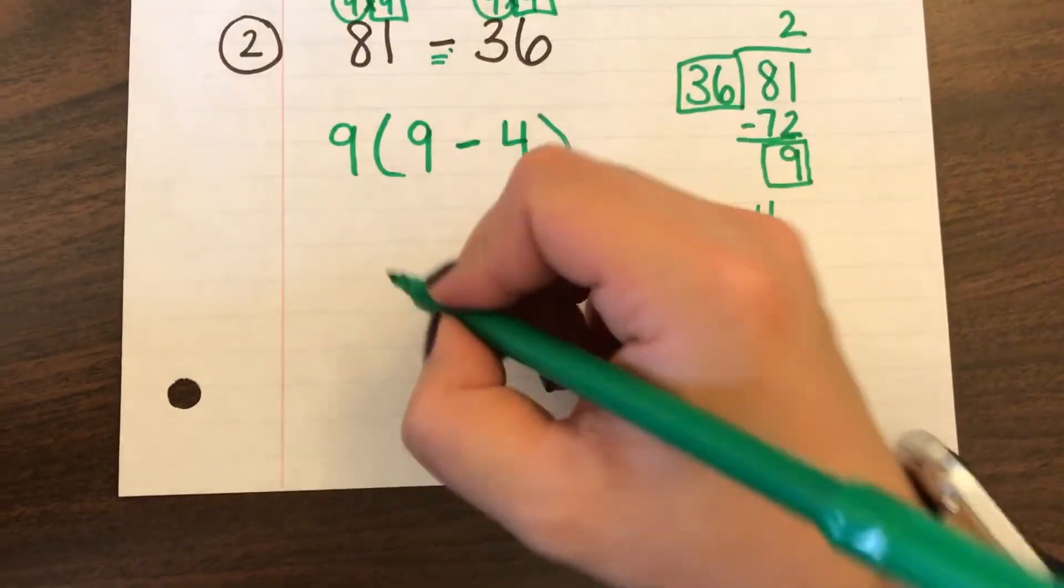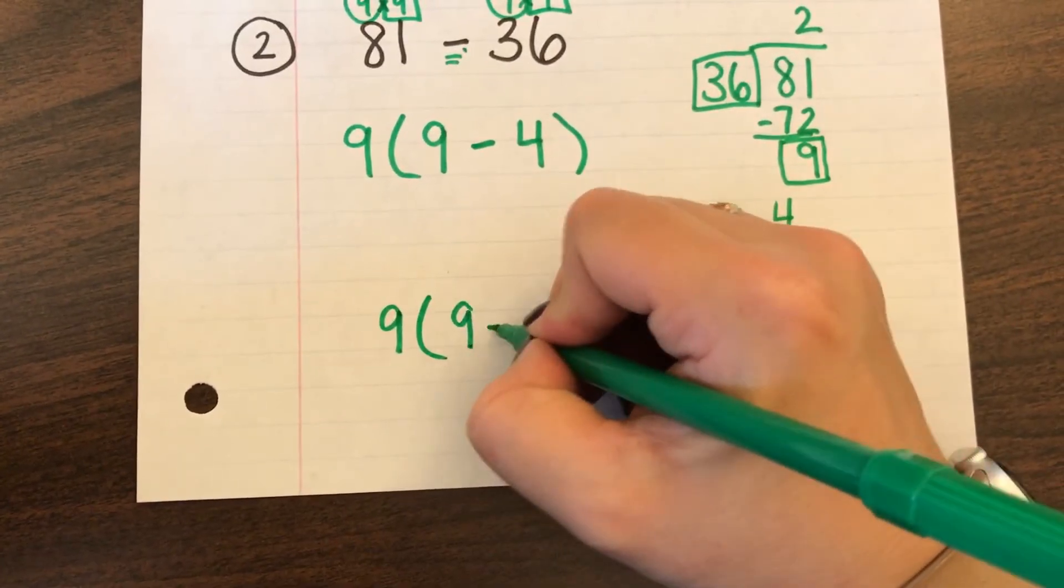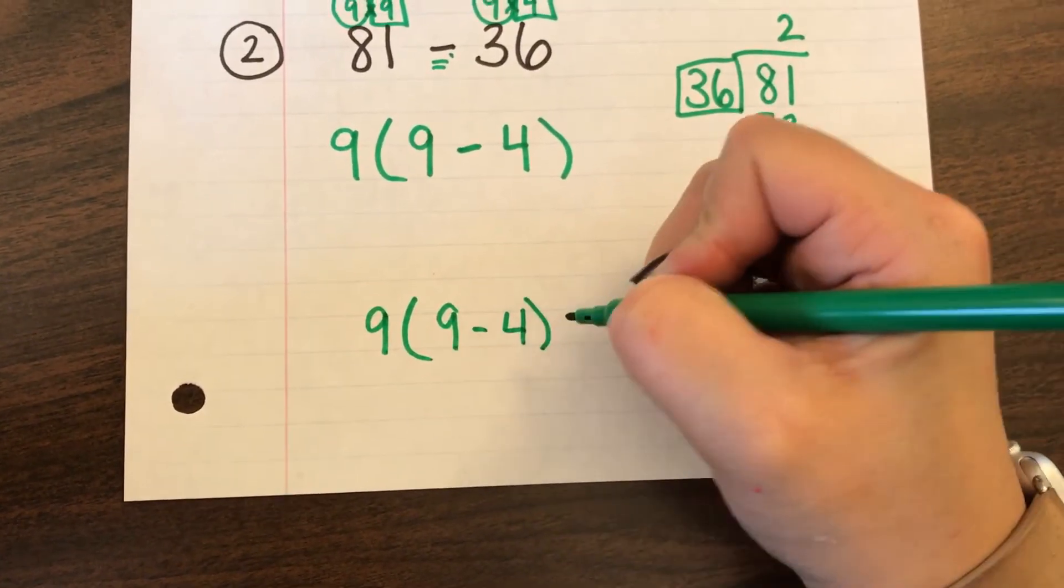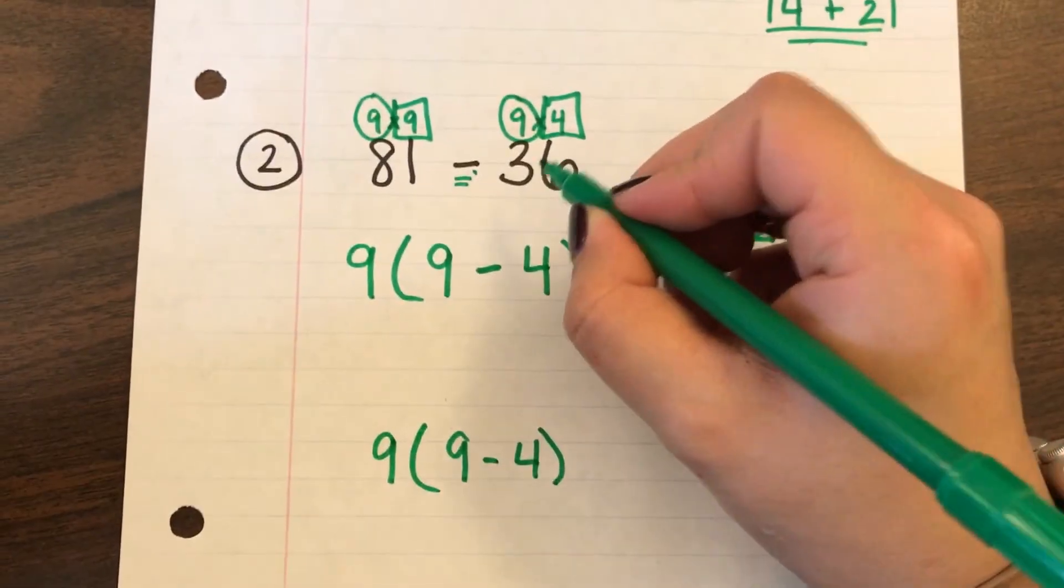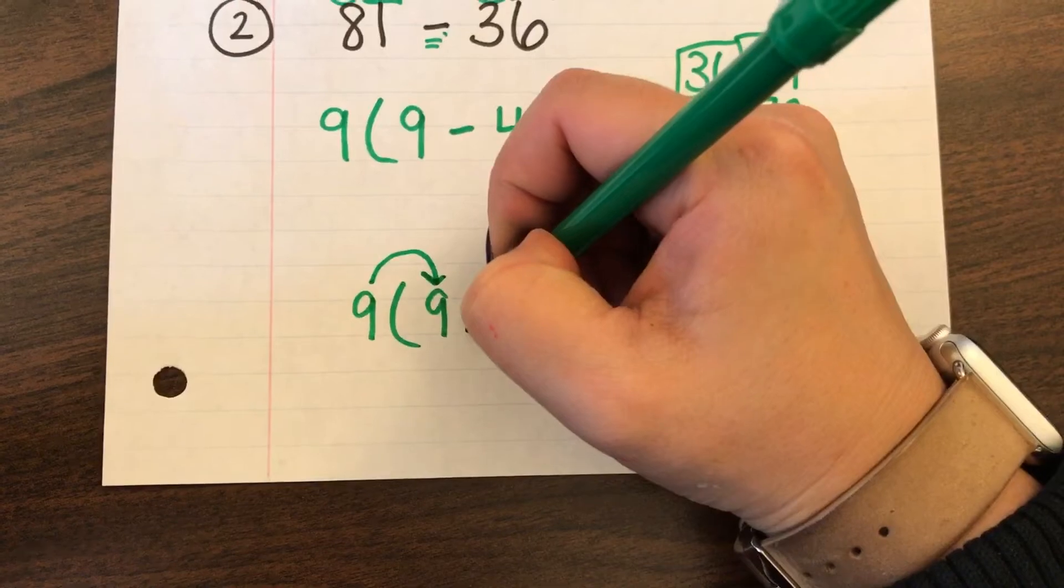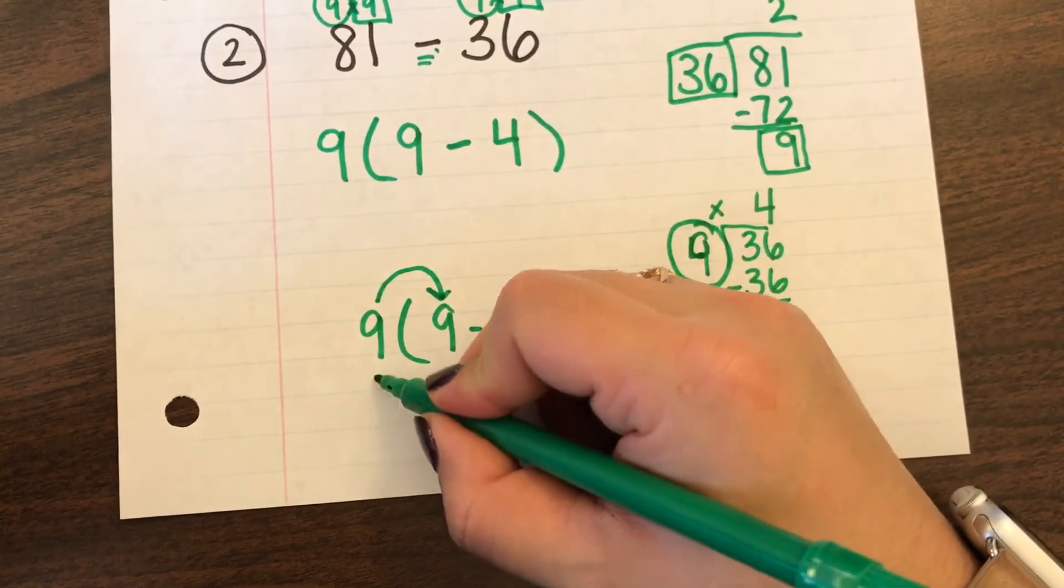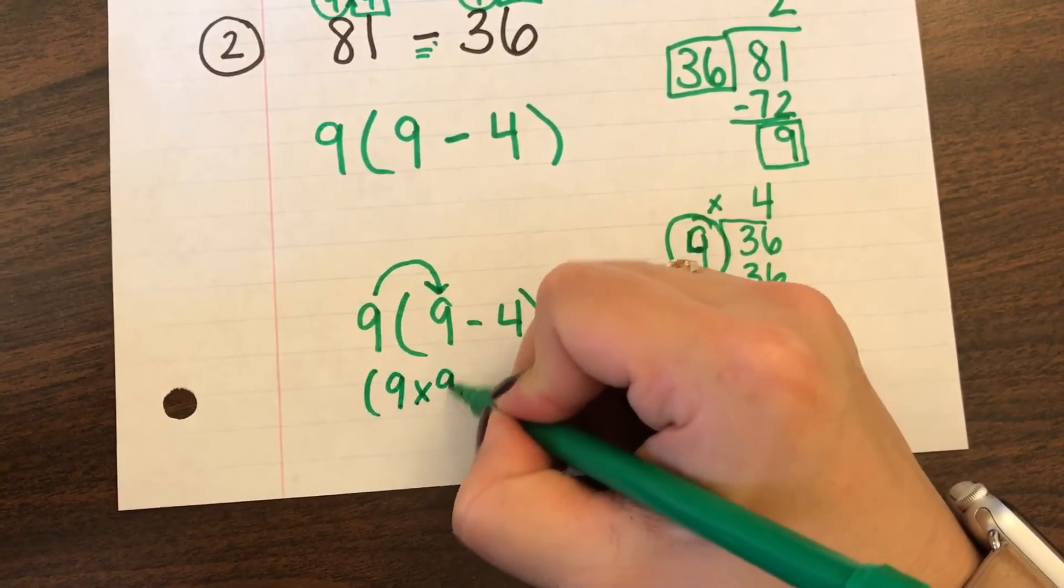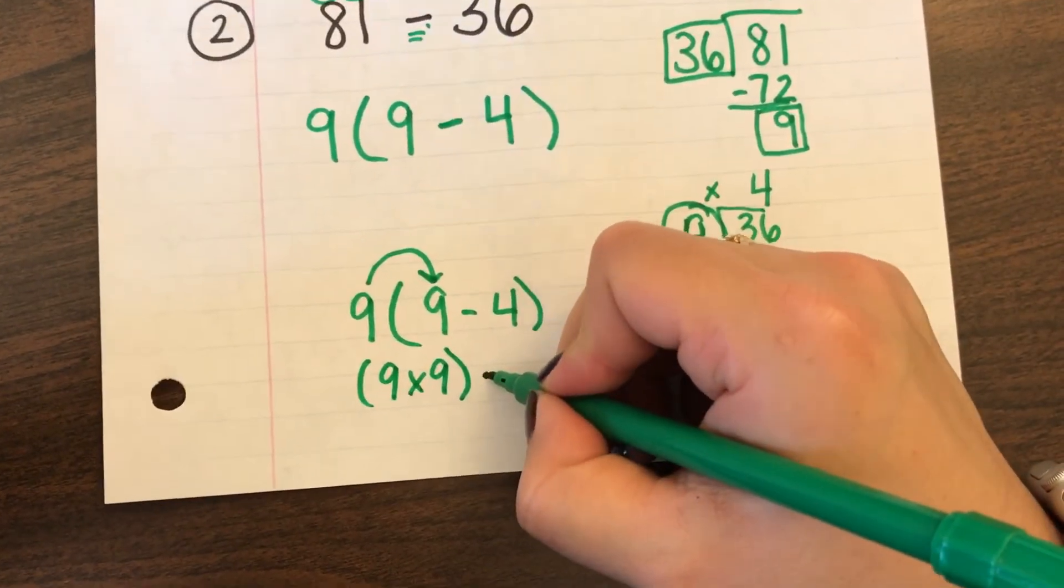And again if I wanted to check it I could come down here. And if I used my distributive property to check this it should come out to 81 minus 36. So if I say bye because it's a minus, say bye multiply. So I would get 9 times 9 and say bye so it's a minus sign.